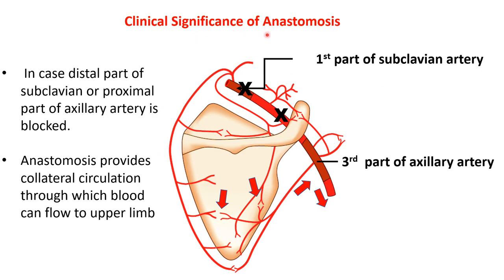What is the clinical significance of the anastomosis around the scapula? Suppose there is a block in the distal part of the subclavian artery beyond its first part — that is, in the first or second part of the axillary artery, proximal to the third part. In such a case, the anastomosis around the body of the scapula will provide collateral circulation. Through these anastomotic or collateral channels, blood will reach the subscapular artery, flow back to the third part of the axillary artery distal to the block, and then travel through the brachial artery to supply the upper limb.